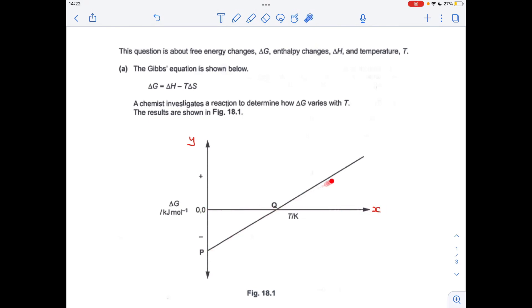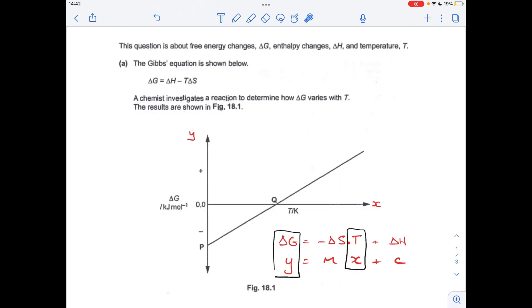We've got a straight line graph so it obviously must follow the straight line graph equation. If you think about the Gibbs equation in this format, ΔG = ΔH - TΔS, rather than the way it's normally written, you can see we've got y = mx + c. What's multiplying x is the gradient, so minus delta S, and the c, the y-intercept, is delta H. So just quickly explain: the gradient is minus delta S, the y-intercept is delta H.